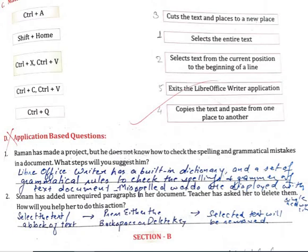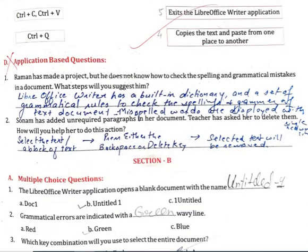Now the application-based portion. Raman has made a project but he does not know how to check the spellings and grammatical mistakes in a document. LibreOffice Writer has a built-in dictionary and a set of grammatical rules to check the spellings and grammar of the text. Misspelled words are displayed with a red wavy line. Sonam has added unrequired paragraphs in her document. The teacher has asked her to delete them. Select the block of text, then press either the Backspace or Delete key and the selected text will be removed.